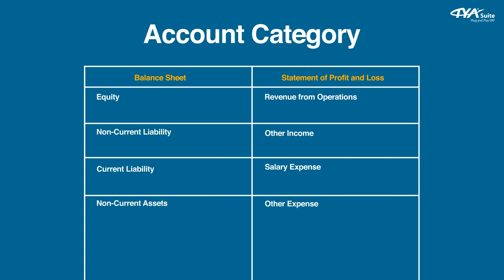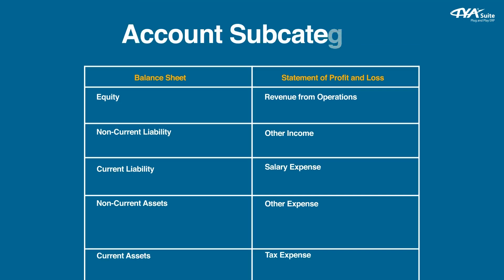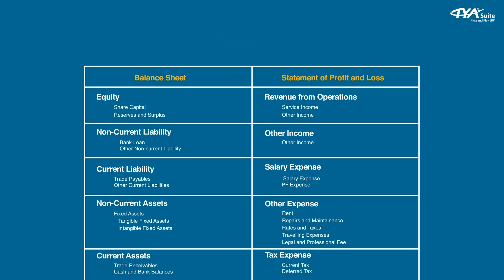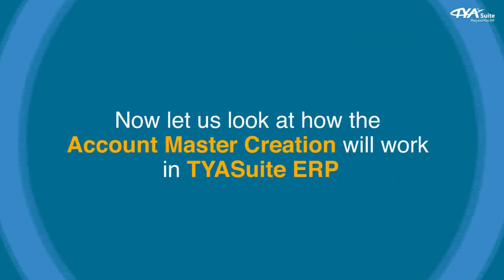For example, equity, non-current liabilities, current liabilities, non-current assets, current assets, etc. are part of the structural classification of the balance sheet. Second, Account Subcategory – this is one level below the structural classification. Under this, you create various groupings which shall be displayed under the headings shown in Account Category. You can create unlimited numbers of groupings under each heading as per company requirements. Third, Account Master – in this menu, you will create individual account codes as per your company requirements. Now let us look at how Account Master creation works in TYASuit ERP.